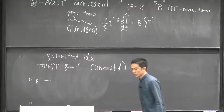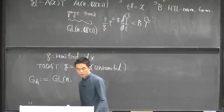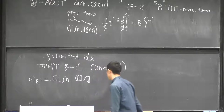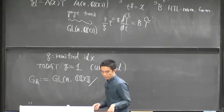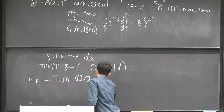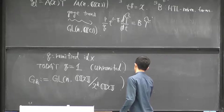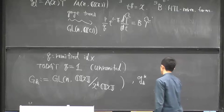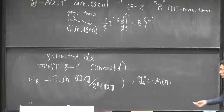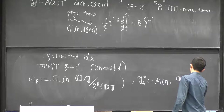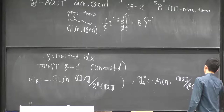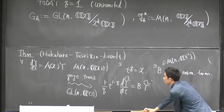First, let us define a truncated gauge group G_K: this consists of formal power series with coefficients cut off by higher terms. Also we will consider a kind of Lie algebra g_K of square matrices with coefficient field here.